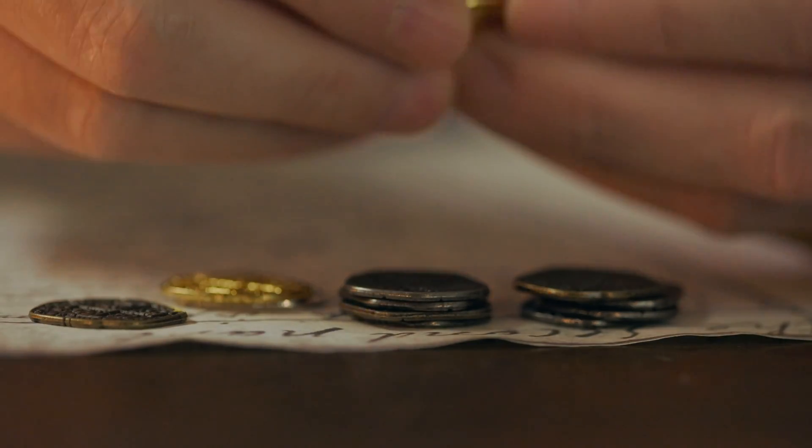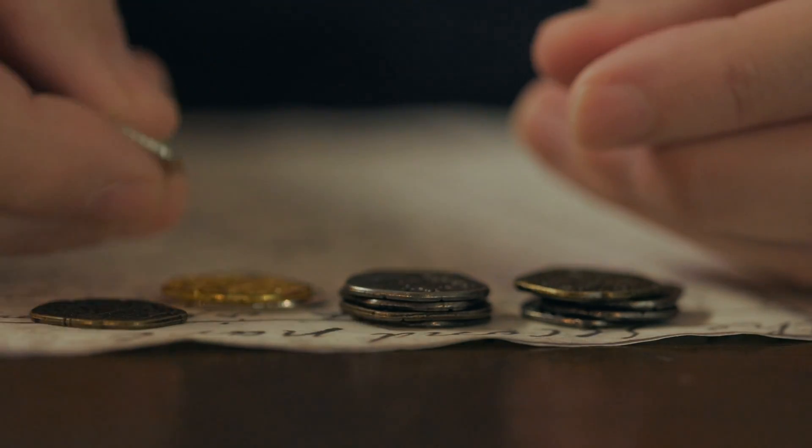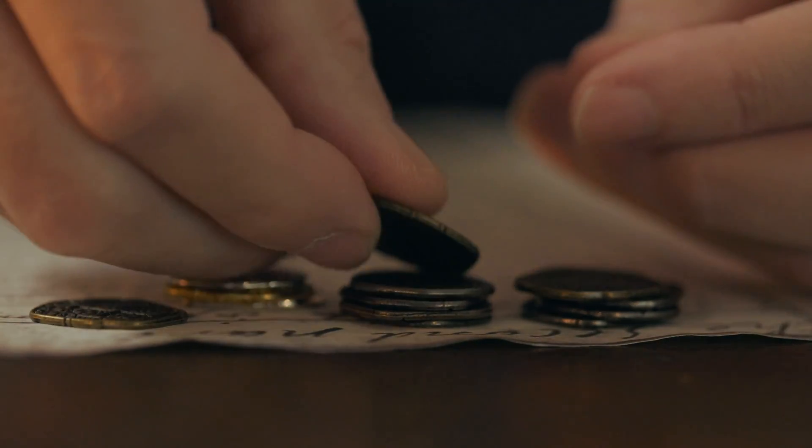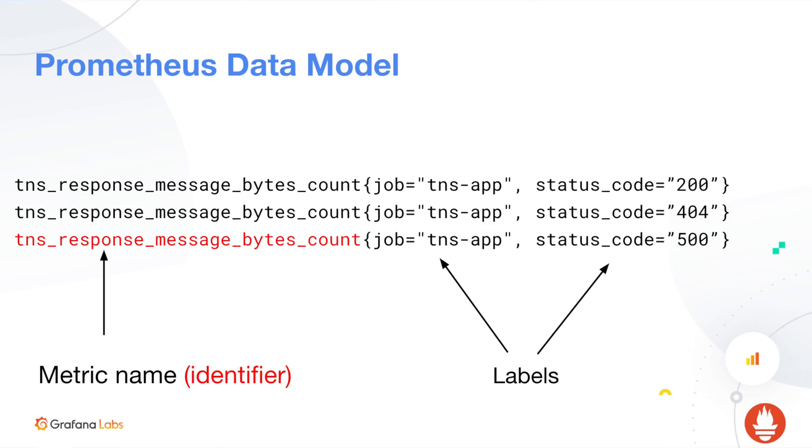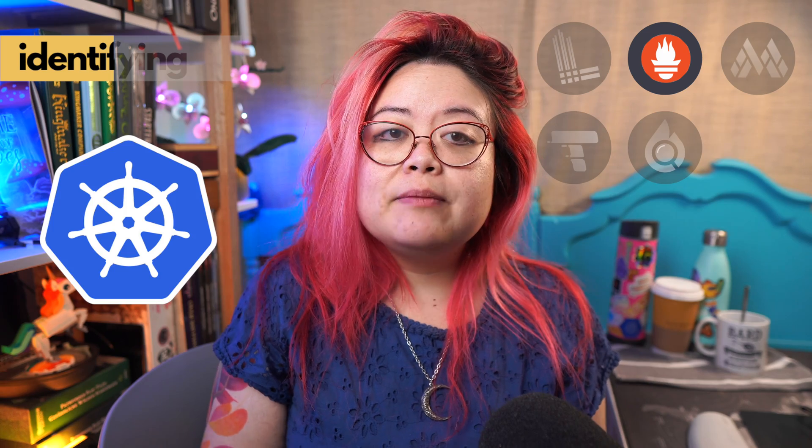Lots of numbers on their own don't mean anything, so you need to do some sort of aggregation for a number to mean something, and that aggregation can take a long time or a lot of resources. Prometheus solves a lot of these problems. It is a database for metrics, but instead of using file structures to store data like traditional databases, it uses labels, and that makes it really performant. It works well with microservices and Kubernetes, and the query language is called PromQL.